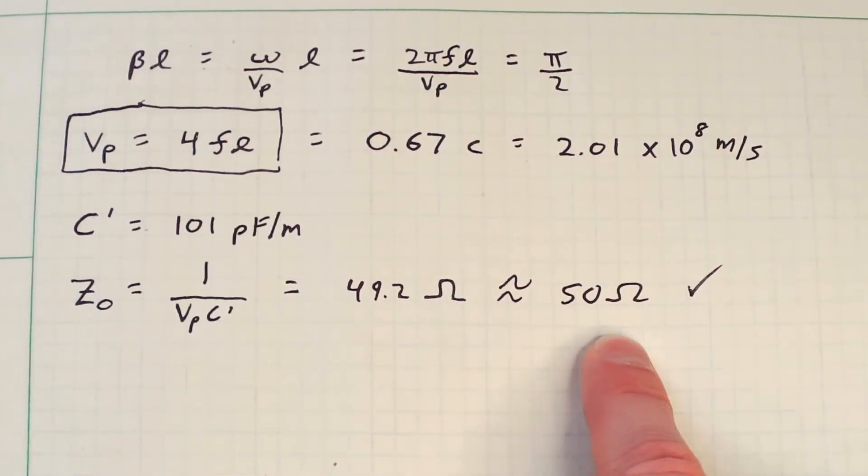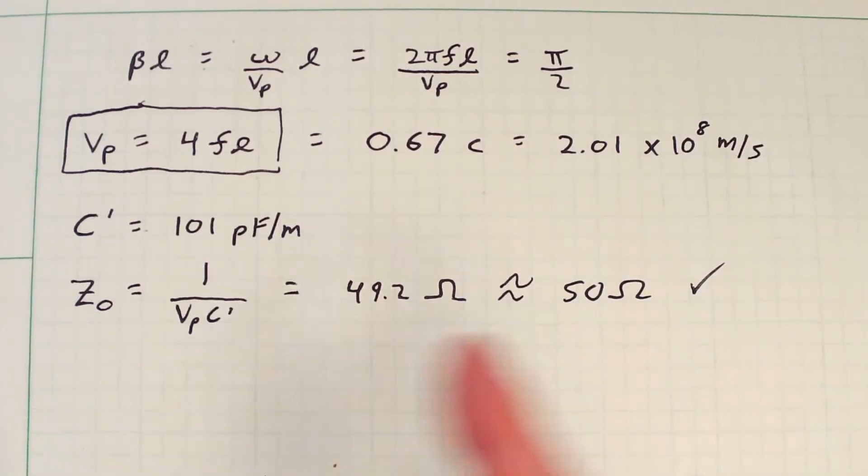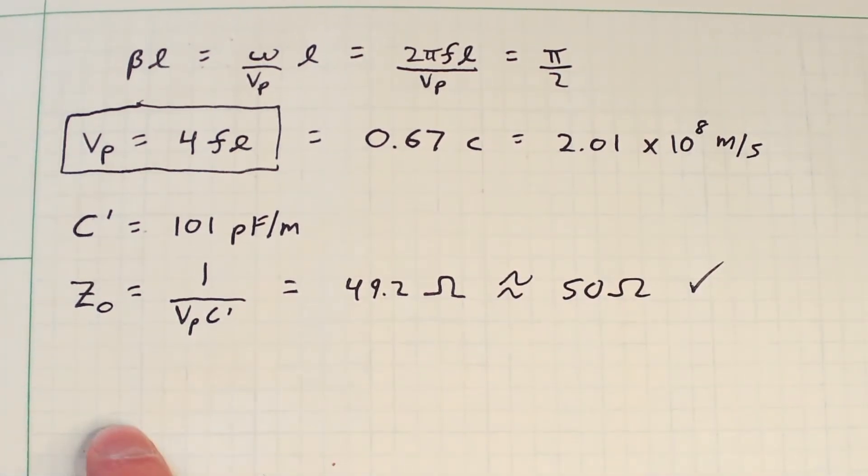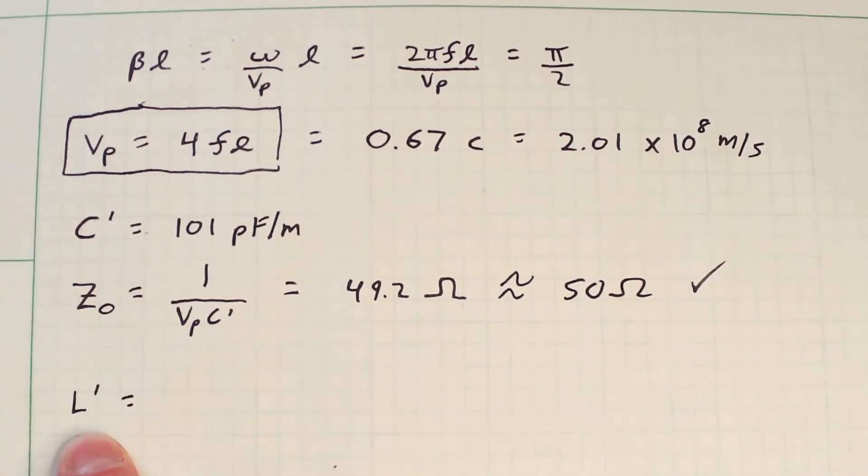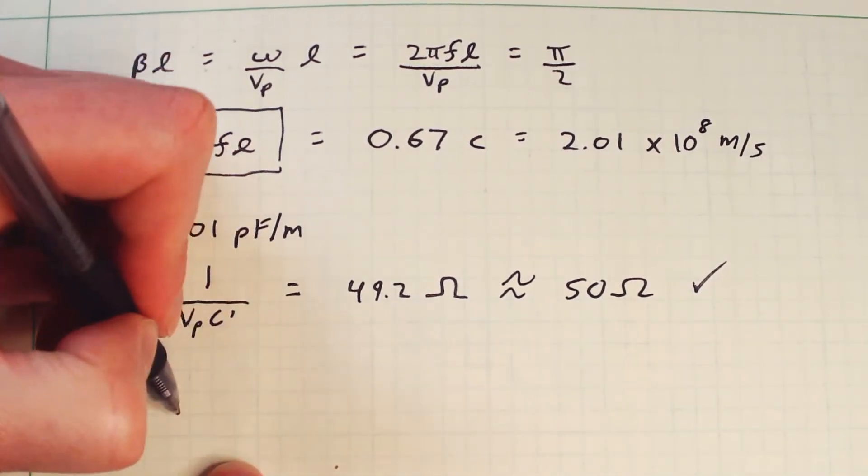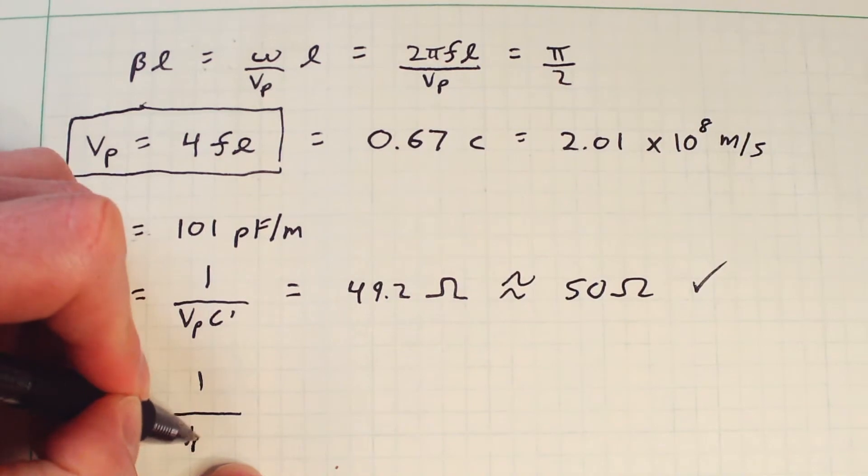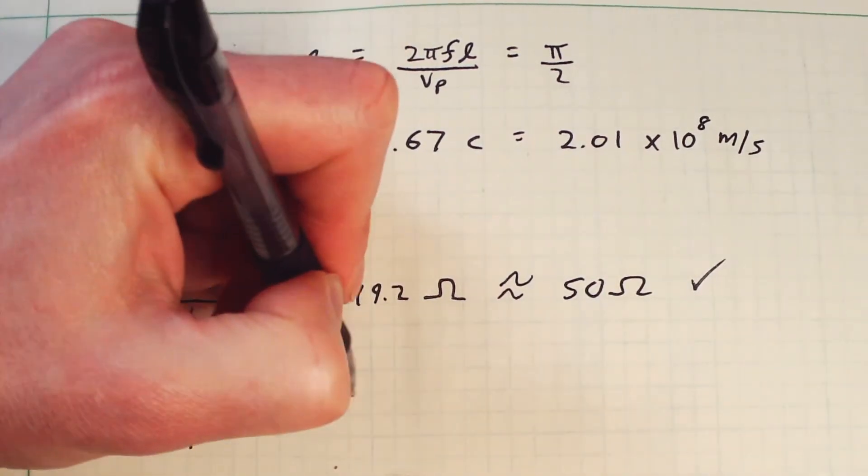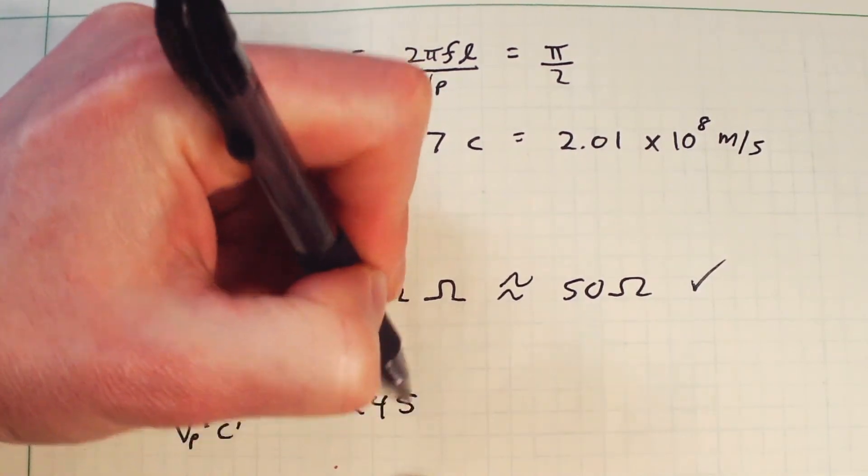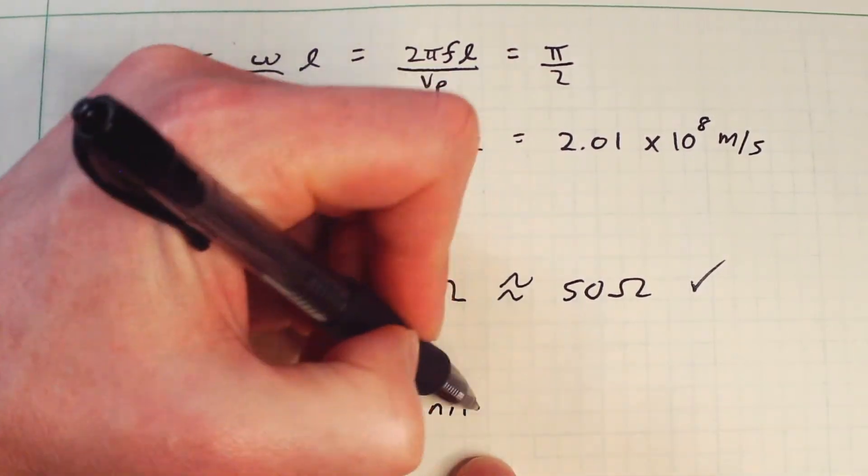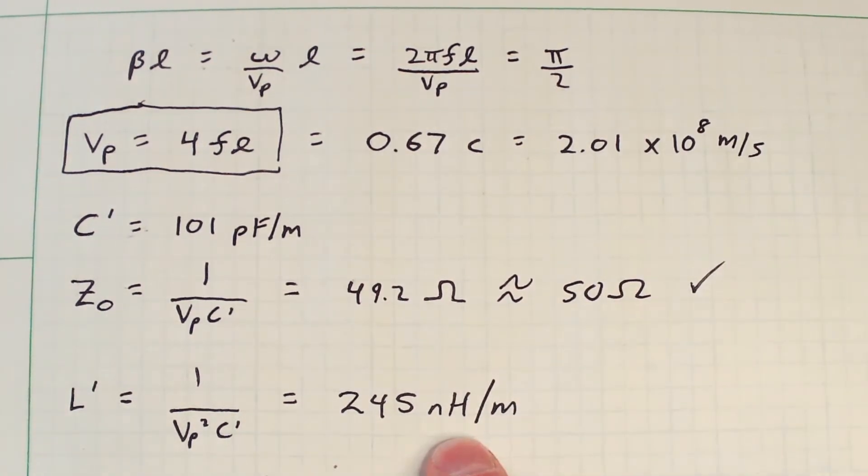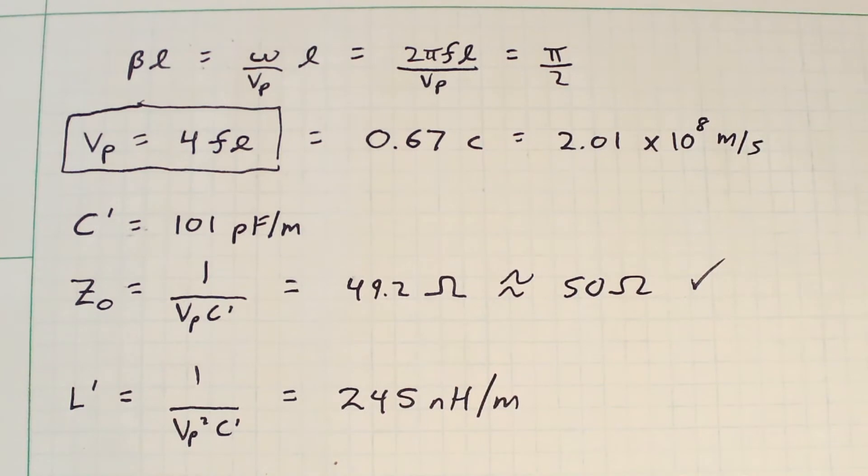But of course, if this was a 75 ohm cable, you would get something very close to 75 ohms as well. Likewise, if I want to calculate the characteristic inductance, I can just say 1 over Vp squared times C' and you plug in all the numbers and you'll get something on the order of about 245 nanohenries per meter. Which again, I already did this calculation offline and you can double check my values here, you'll get something reasonably close.